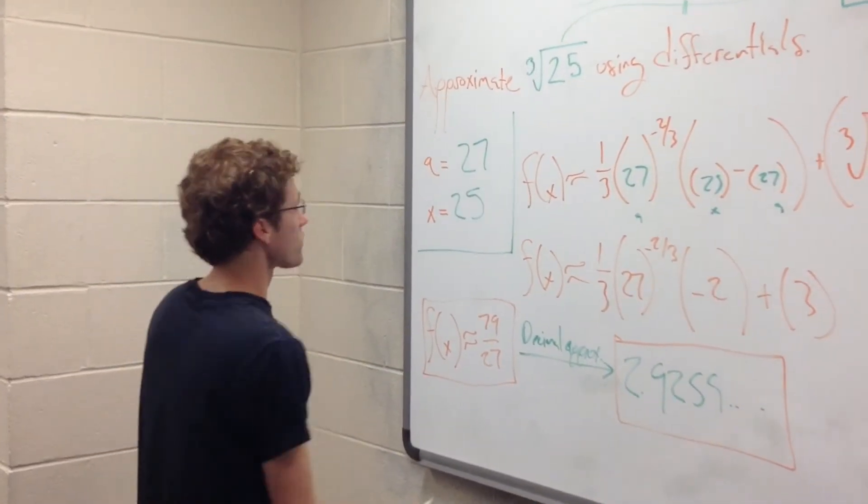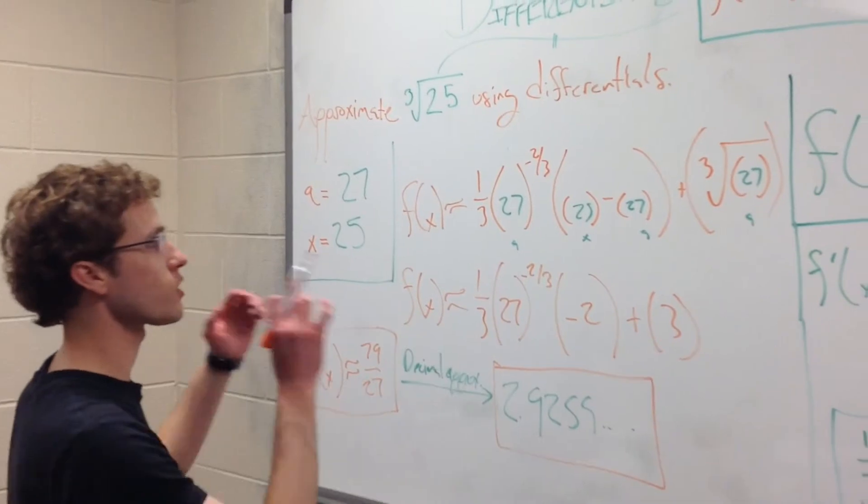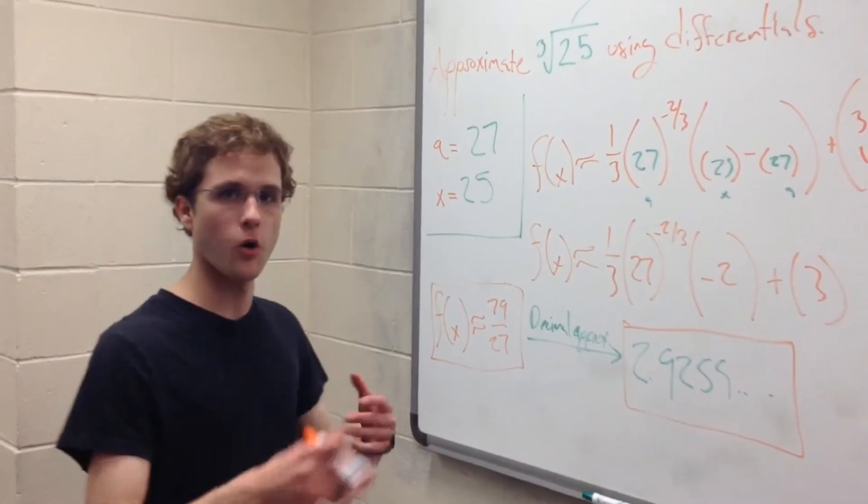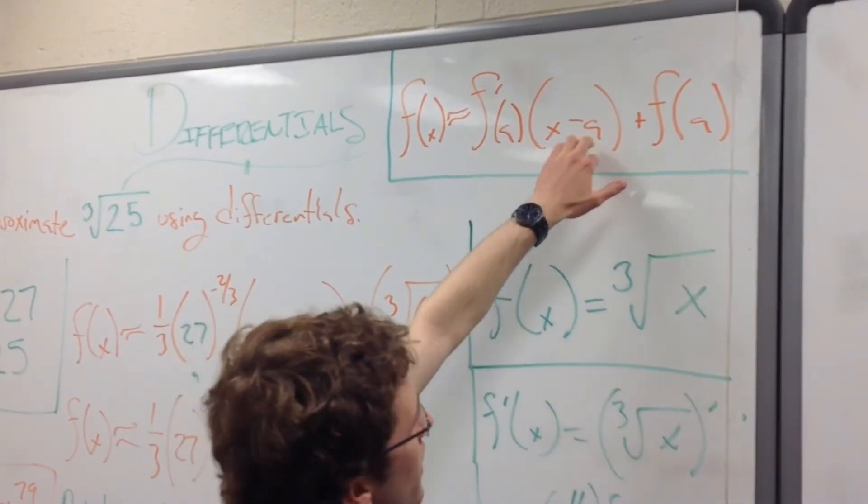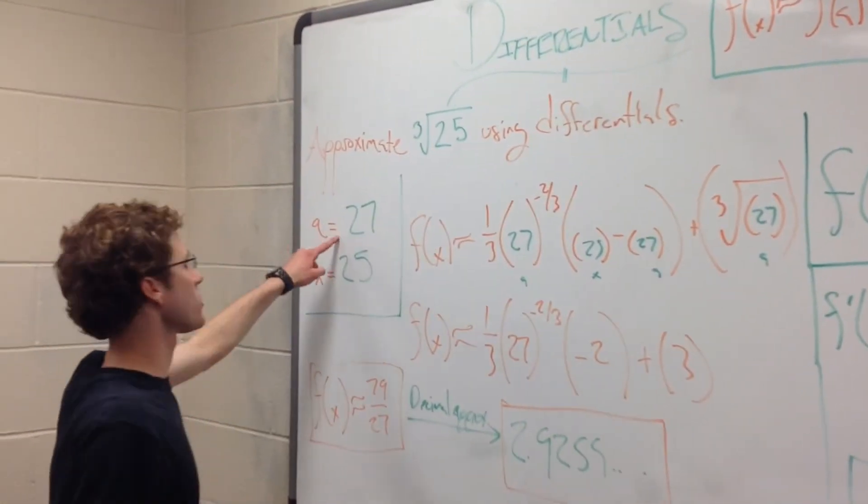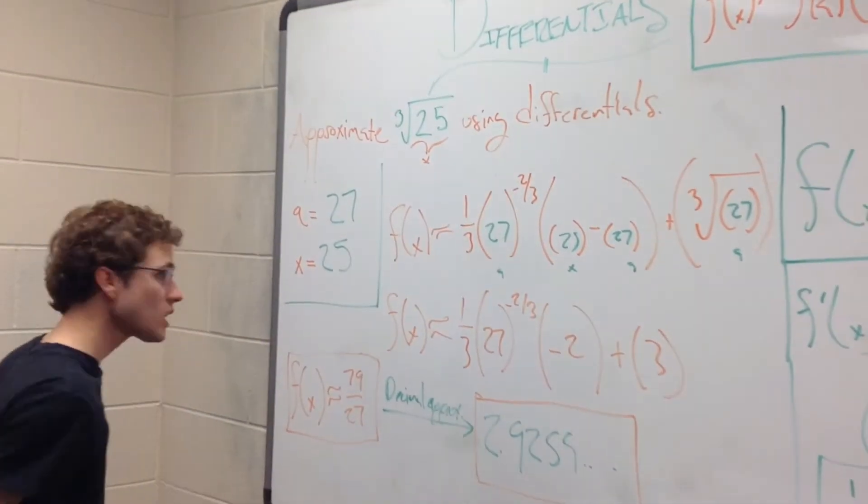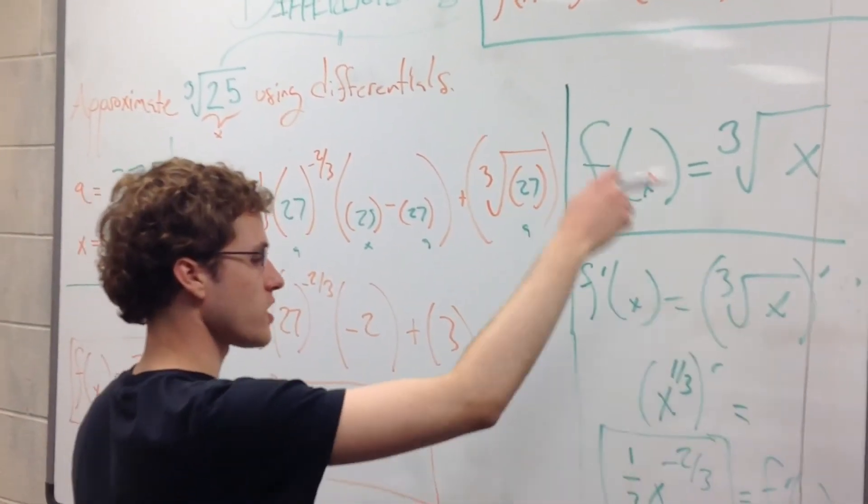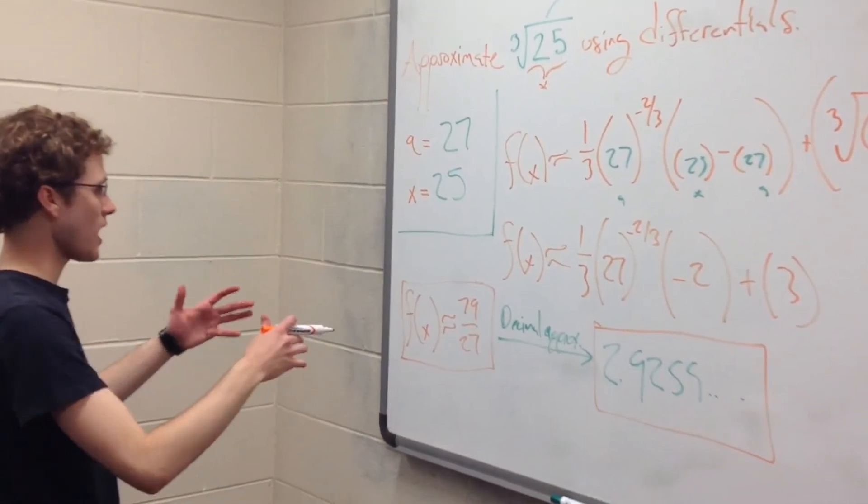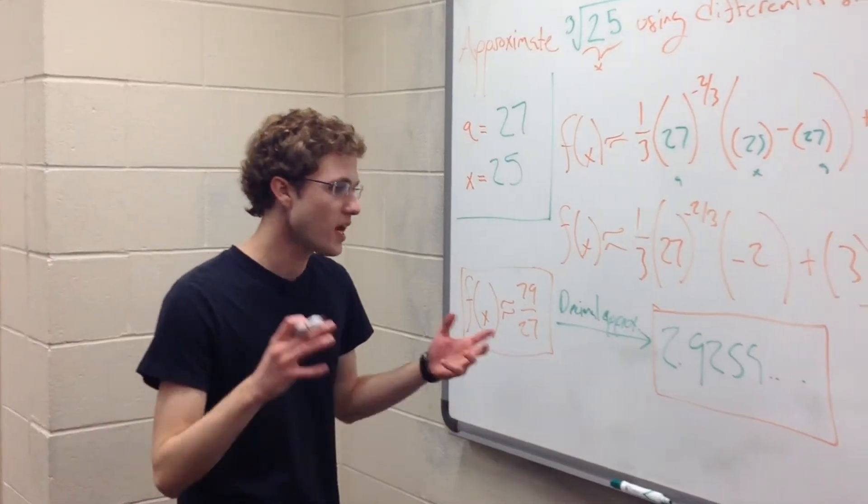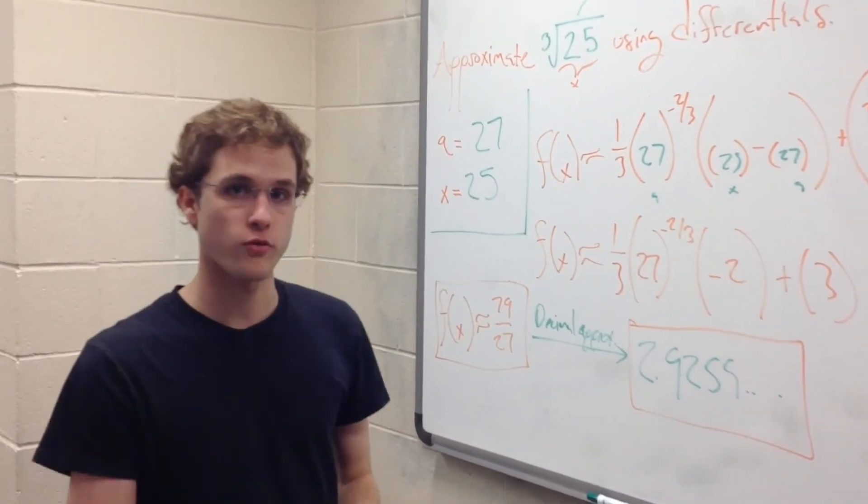We can't get perfectly accurate. So to recap really quickly, what did we do? We wanted to approximate a terrible value, the cube root of 25, a very ugly number. So we use differentials because calculus lets us get really close without a whole bunch of guesswork. We plug it into this formula: f of x is approximately equal to f prime of a times x minus a plus f of a, with our a being 27 because that's a number that it's easy to take the cube root of. Our x is 25 because that's what was already underneath the radical sign. We took f of x, we took f prime of x. We got that the derivative is one-third x to the negative two-thirds. We plugged everything into our equation. And we came out that f of x is roughly equal to 79 over 27, a decimal approximation of which is 2.9259. So there you have it, a very simple problem using differentials to approximate a value.